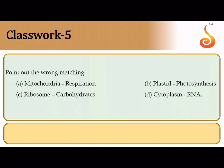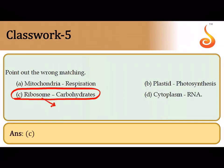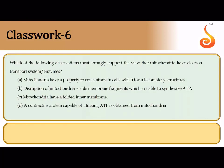In the wrong-matching question: mitochondria–respiration and plastids–photosynthesis are correct, but ribosome–carbohydrate synthesis is wrong because ribosomes are the protein factories of the cell, involved in protein synthesis, not carbohydrate synthesis. Evidence strongly supporting that mitochondria have the electron transport system: even disrupted fragments of the inner mitochondrial membrane have been shown to synthesize ATP in complete isolation, given the right reaction medium.